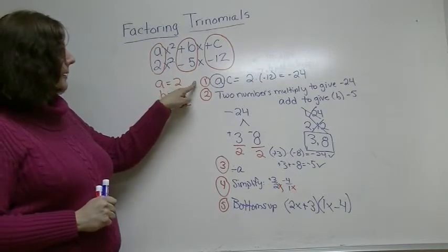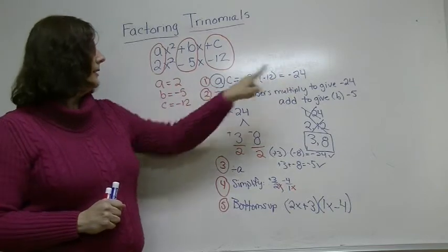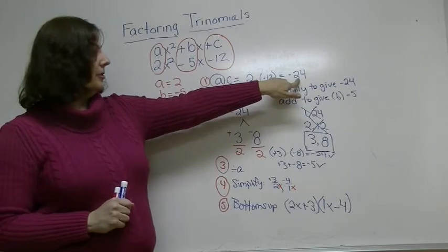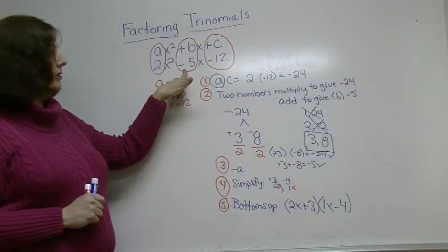Just to review the steps: multiply the A times the C. Step 2, think of 2 numbers that multiply to give you the number you just found and add to give you the B term.